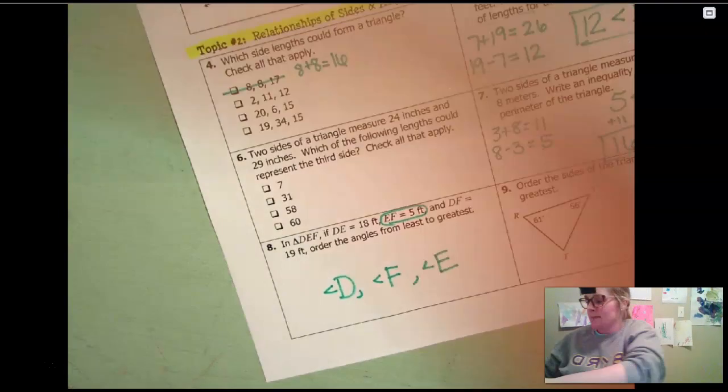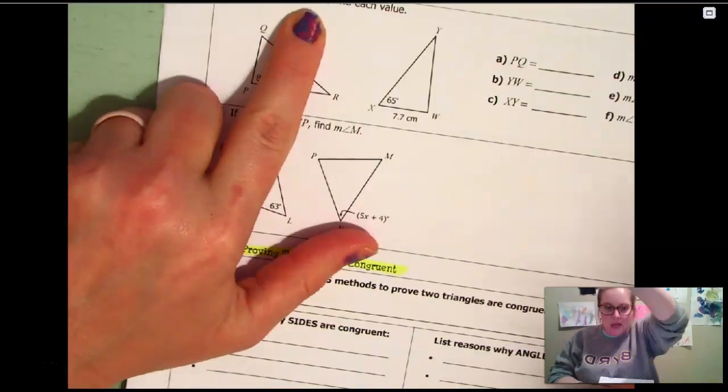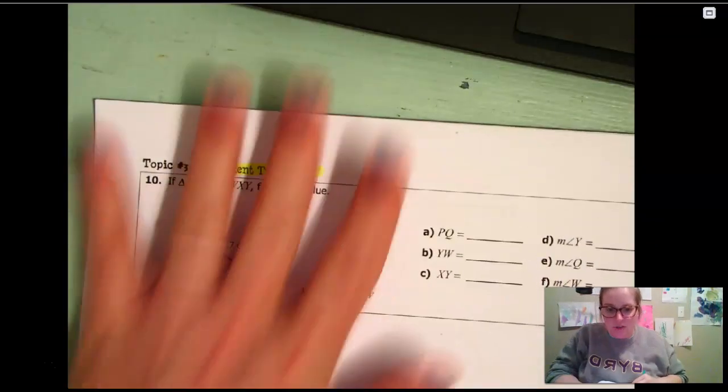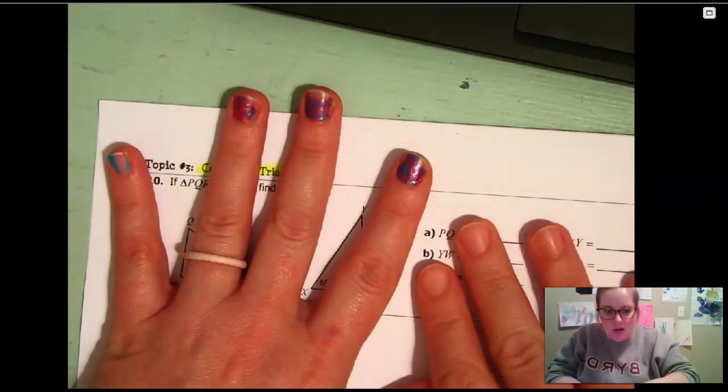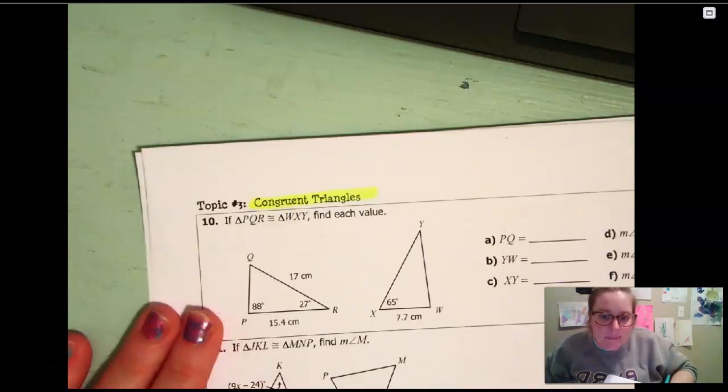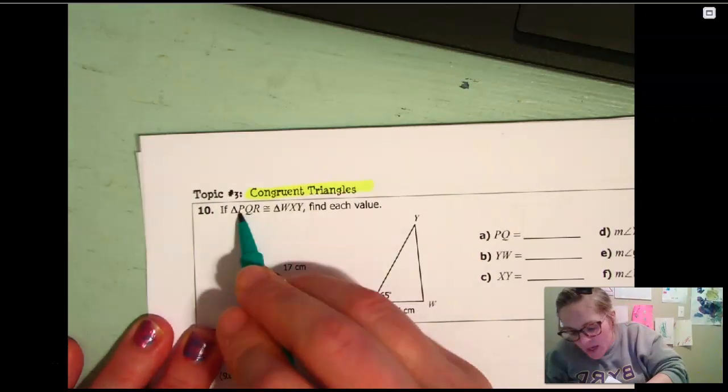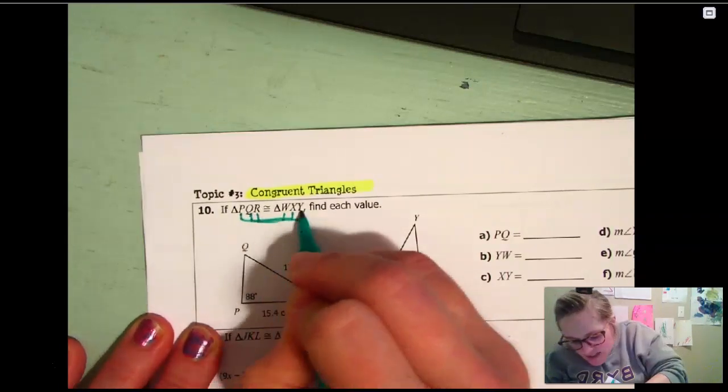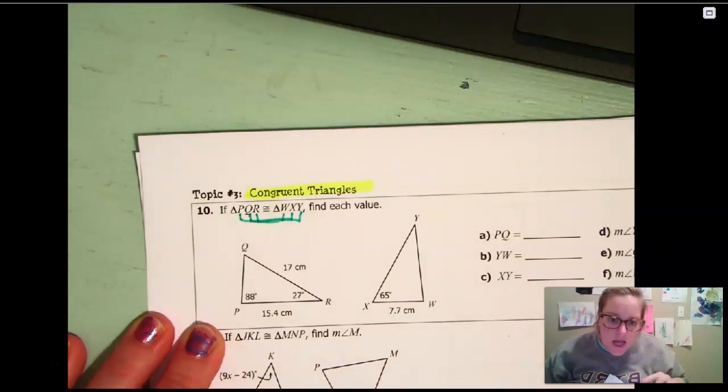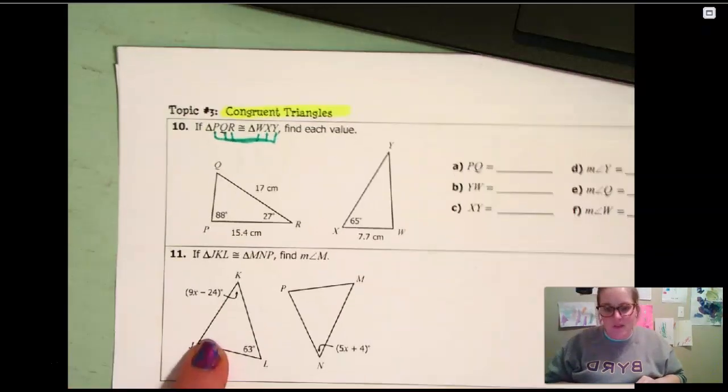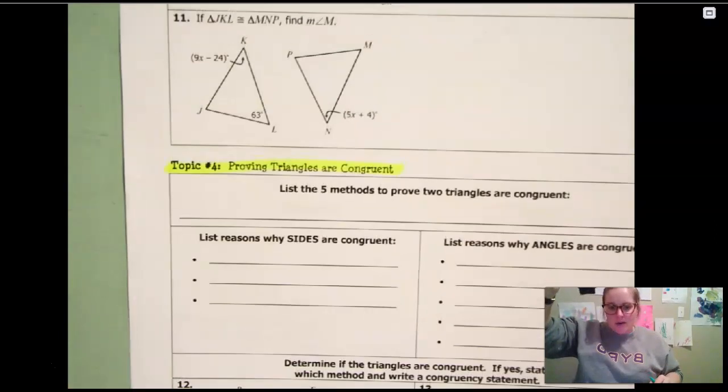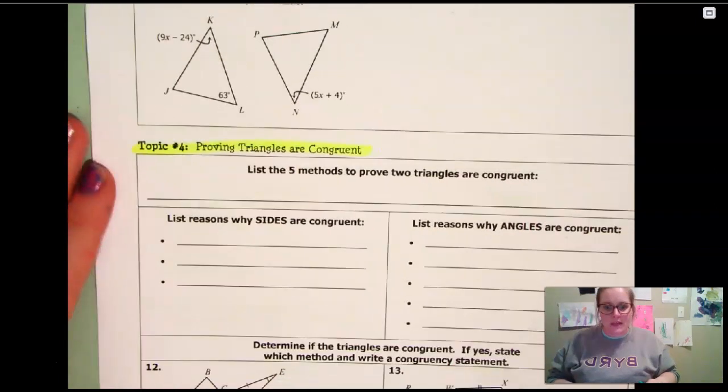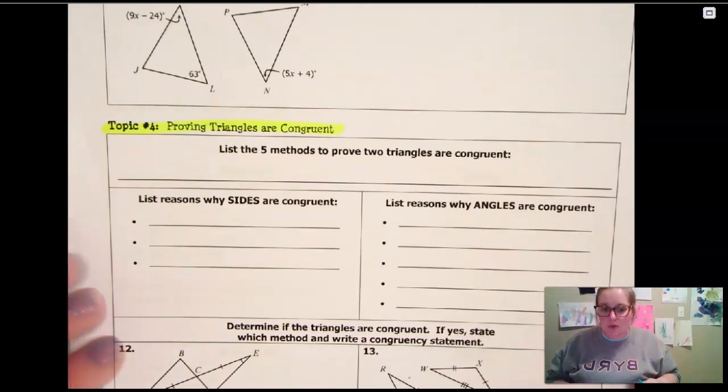The next topic that we're talking about is congruent triangles. Y'all like my manicure my child gave me? This hand's not done at all, just this one. Congruent triangles. Remember that these congruency statements are going to tell you who belongs with who. So P is with W, Q is with X, R is with Y. So those kind of tell you who goes together to help you match those up. Same thing with eleven. Now, number four, topic number four, is about proving that triangles are congruent. And yes, you do need to go over this.